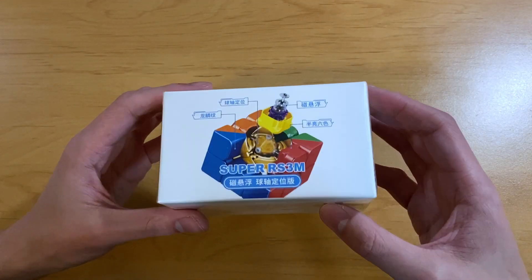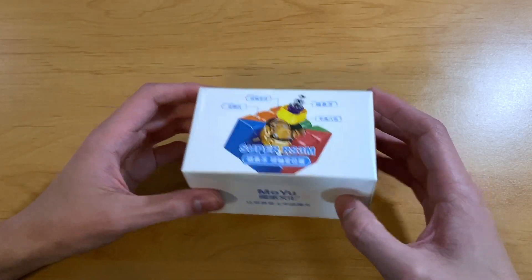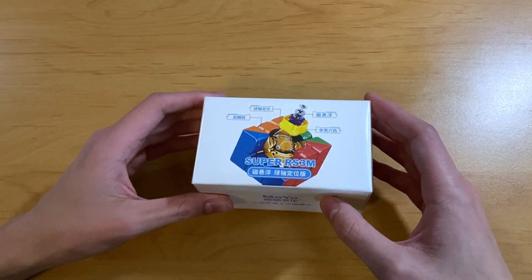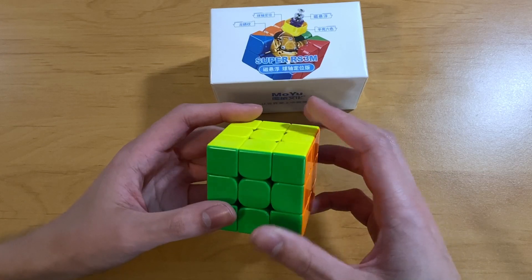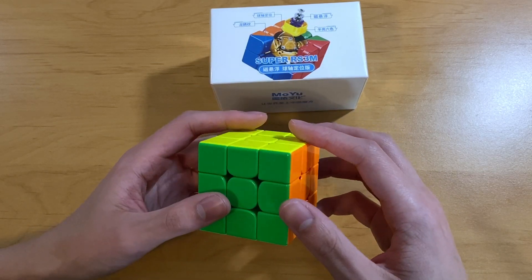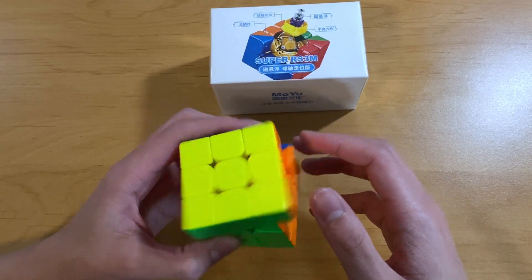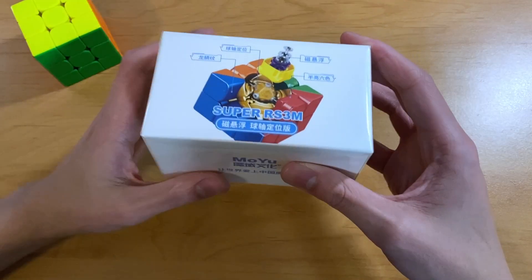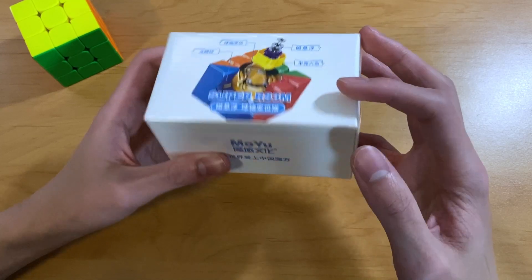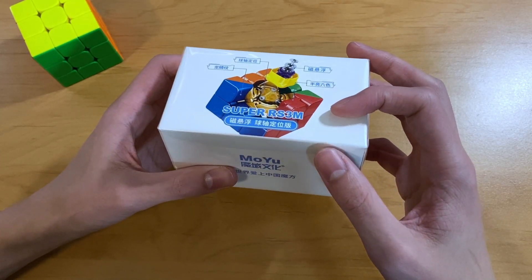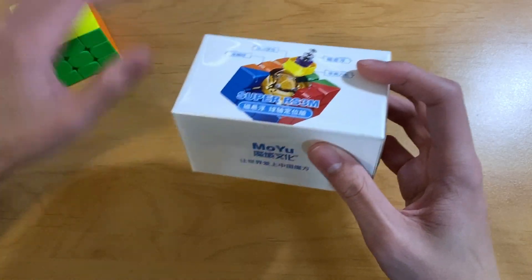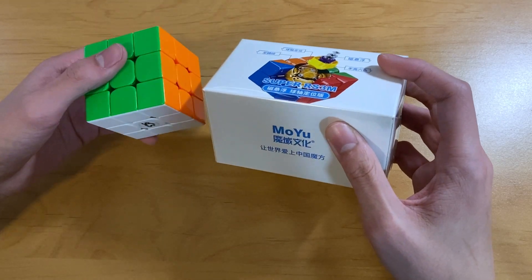This is the Moyu Super RS3M, which is the upgraded version of the RS3M 2021 for 3x3. I currently main this RS3M21 that has the Cubers Home core magnets, so this is corner core mag. This is the ball core version of the Super RS3M, so it also has corner core mags. I'm really curious to see if this is any better than a modded RS3M21.